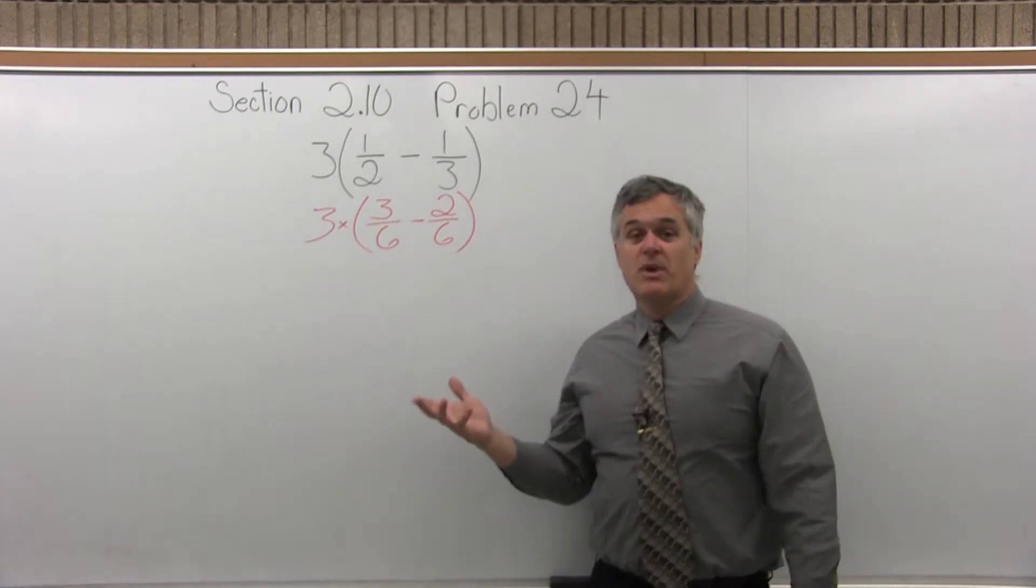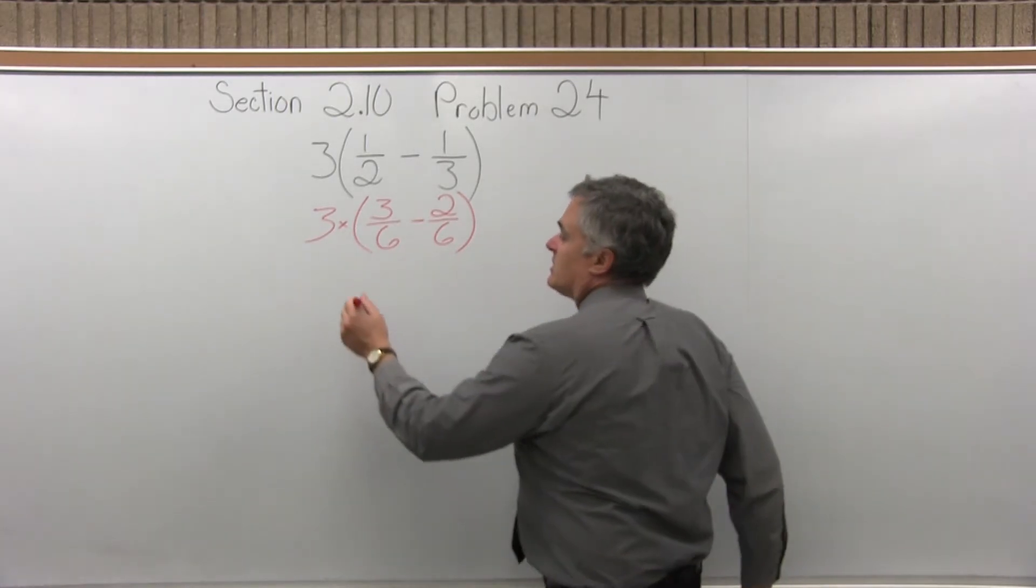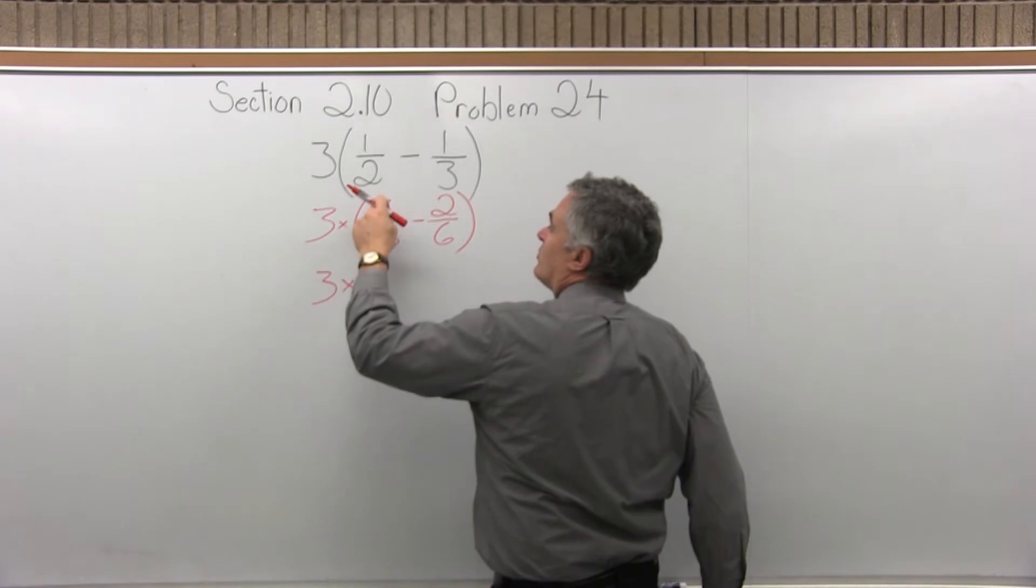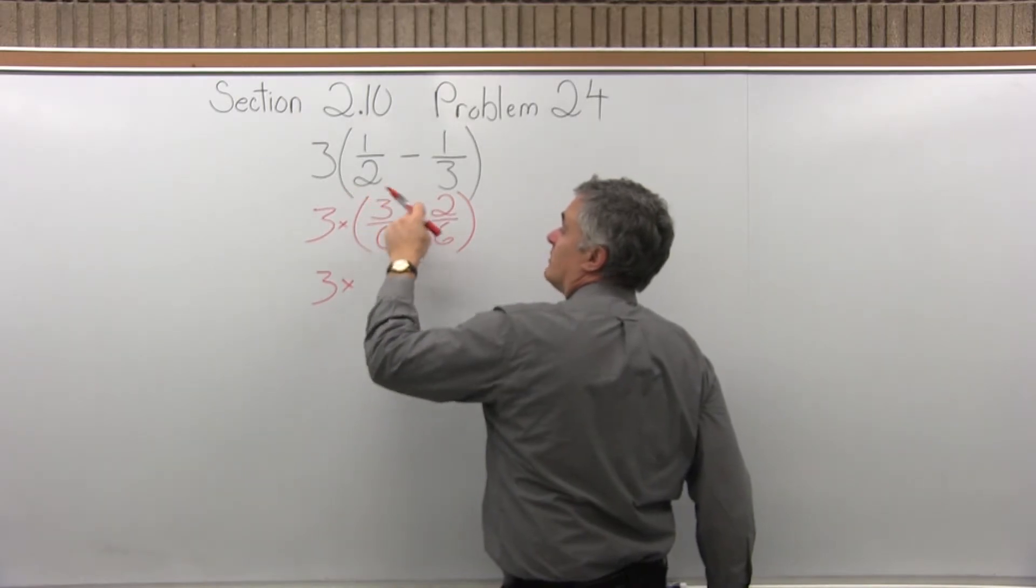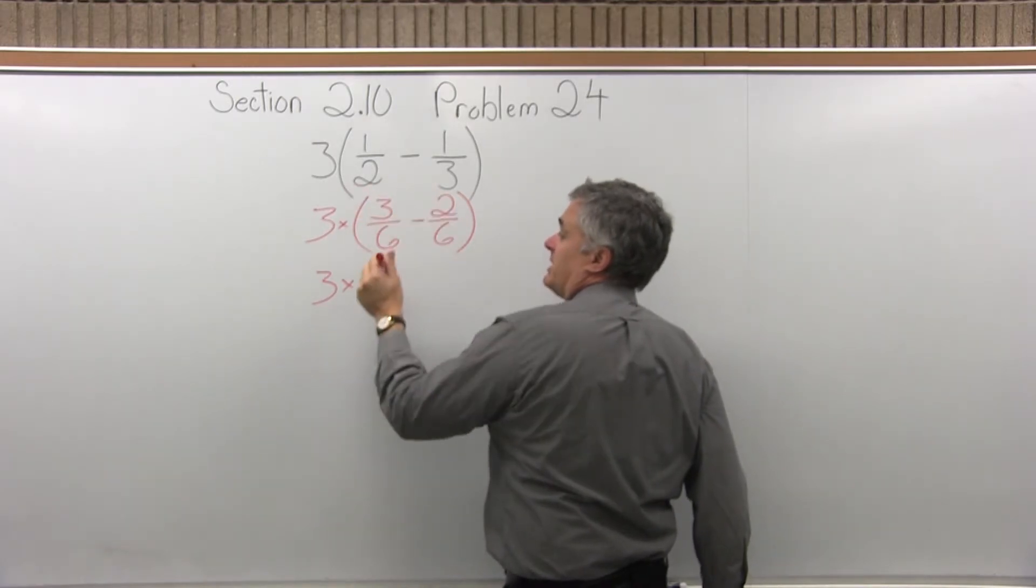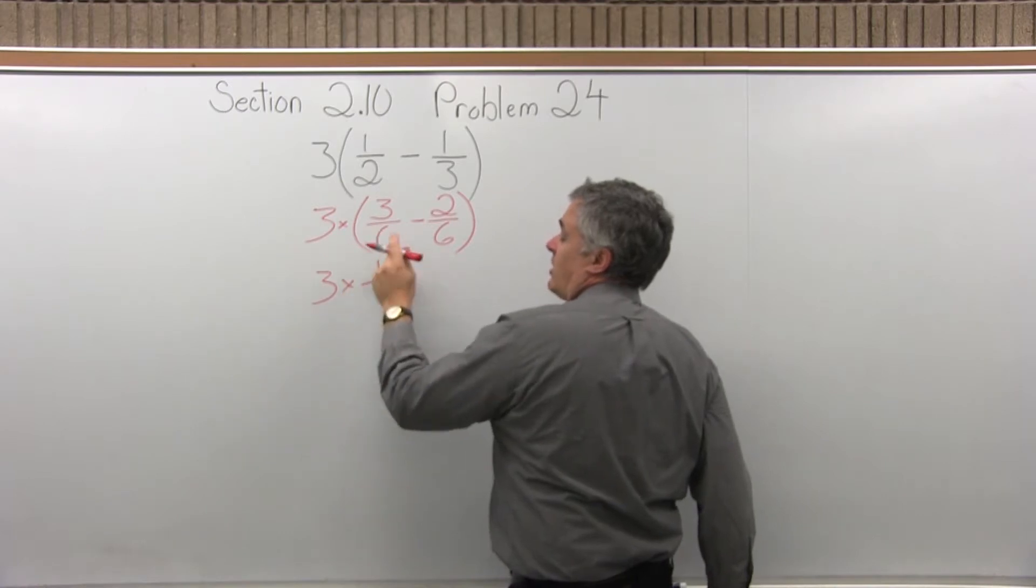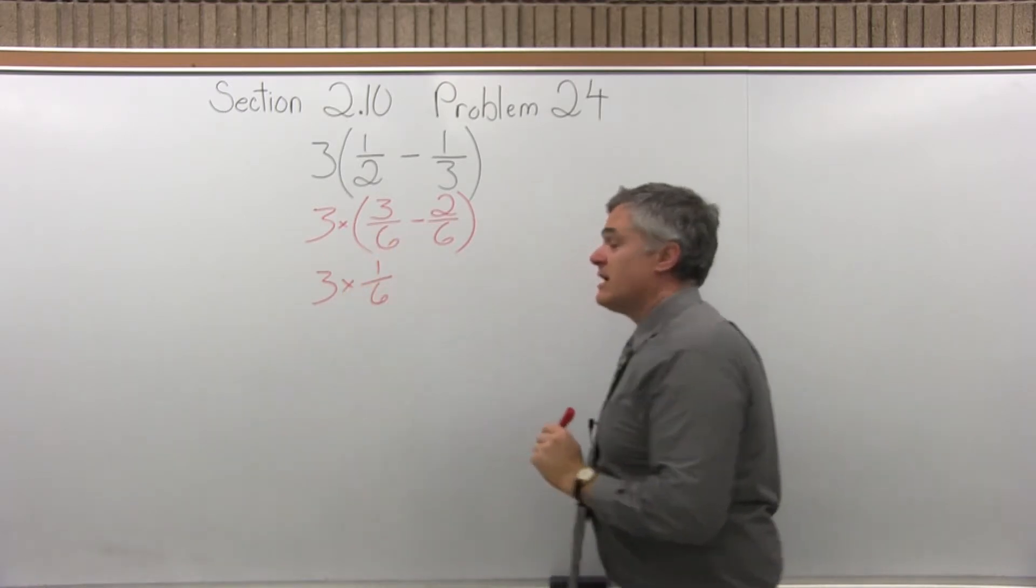Now I can complete my work in the parentheses. So I have a three out in front times three over six minus two over six. So combine the numerators. Three minus two is one. And the common denominator stays. So I have three times one over six.